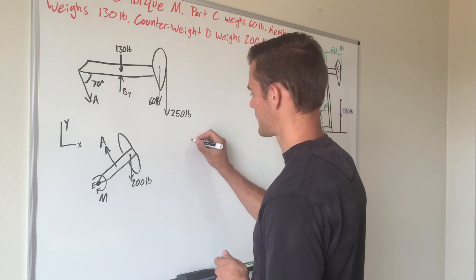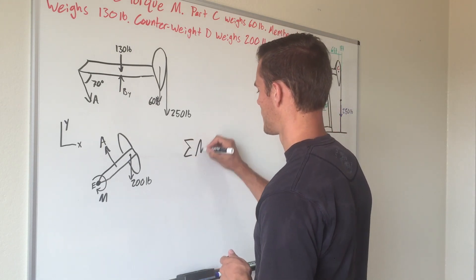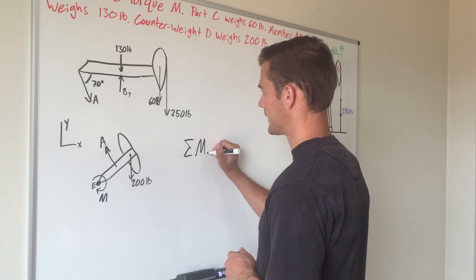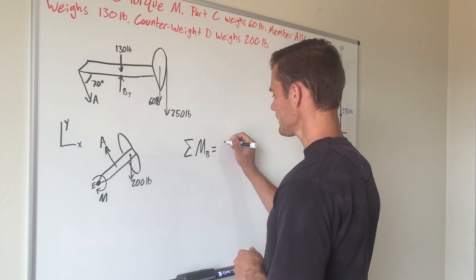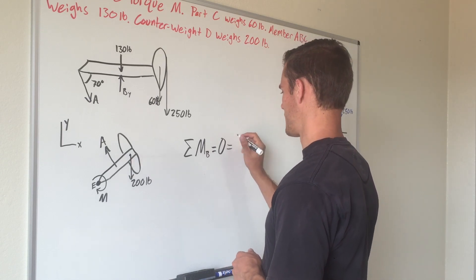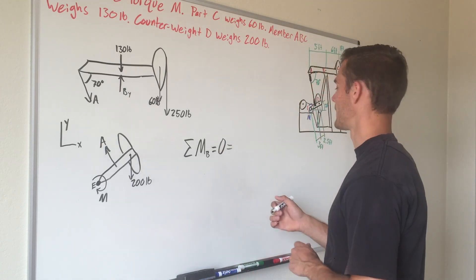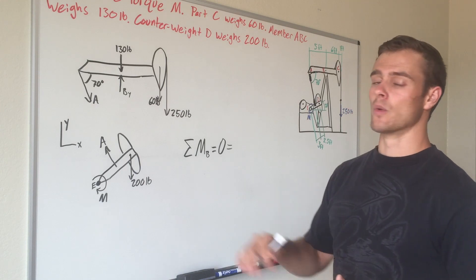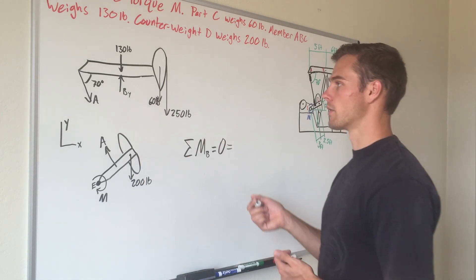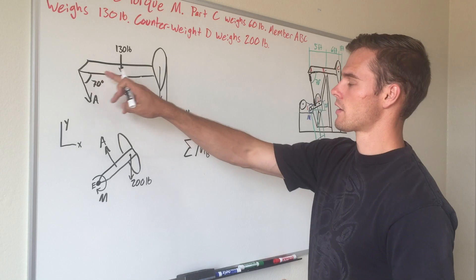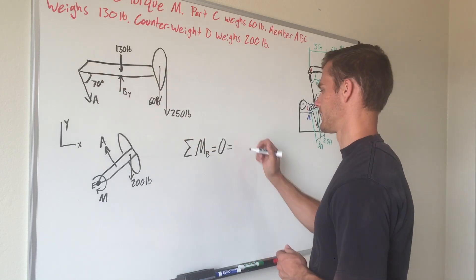We will sum moments about point B and say it's in equilibrium, so it equals zero, because we're just finding the torque at that moment. With this thing moving it's going to change, but we're finding it at the instant that this member is horizontal.